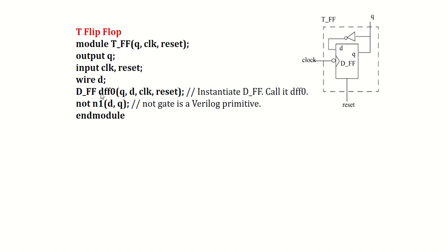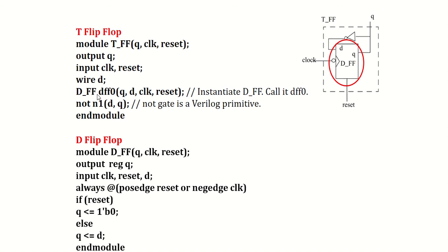While instantiating the D flip-flop, DFF0 is the instance name. Following output-first ordering, Q maps to Q, then input D, then clock, then reset. I also instantiate a NOT gate using the Verilog primitive not, with instance name N1. D is the output of the inverter and Q is the input, forming the T flip-flop feedback.